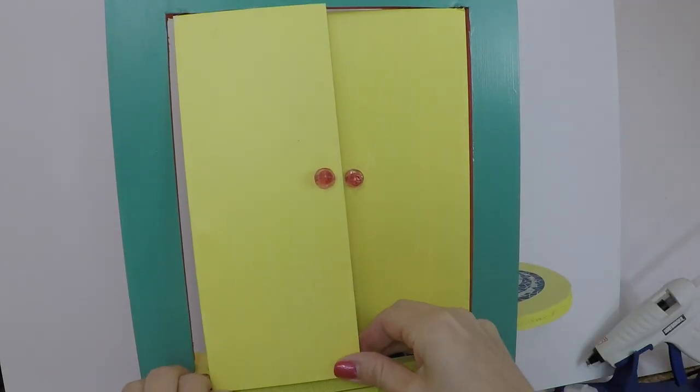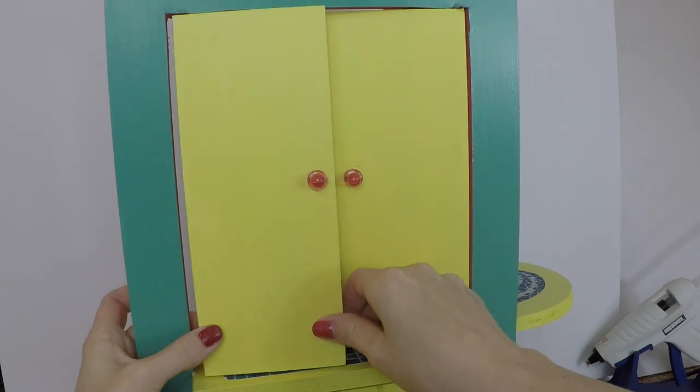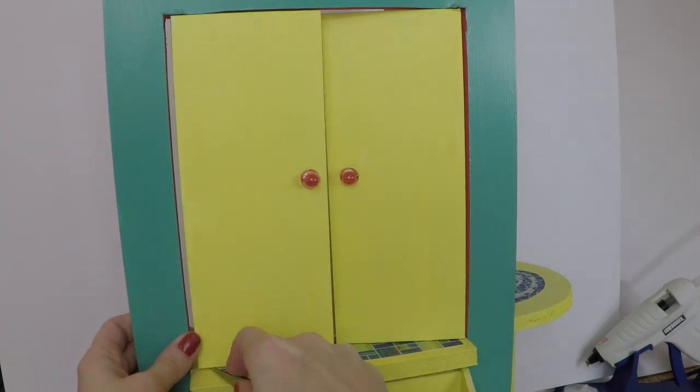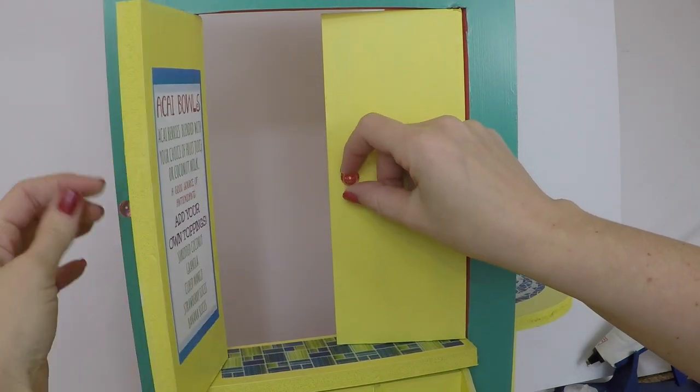So you can press one that's in all the way in the foam. And then with the other one, you'll need to get tweezers or something similar to pull it down into the hole that you've already created. And now they open.